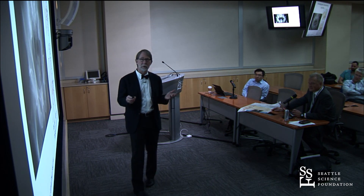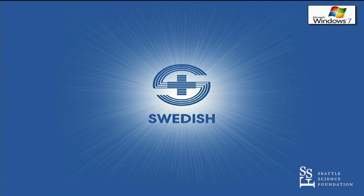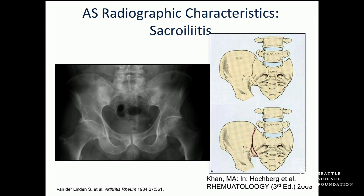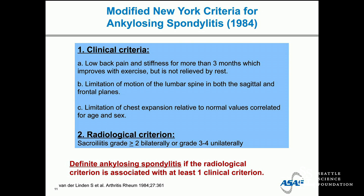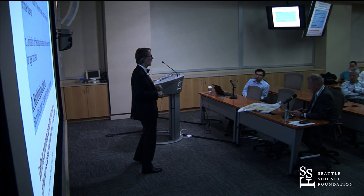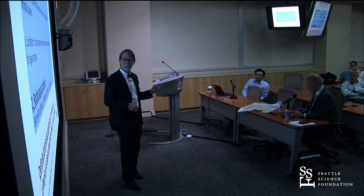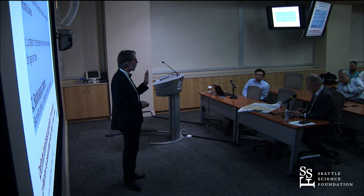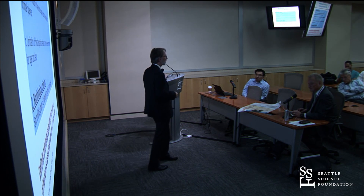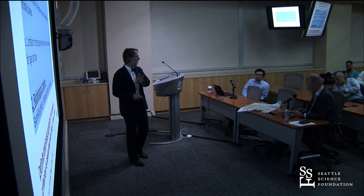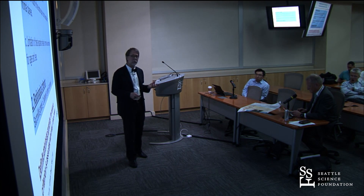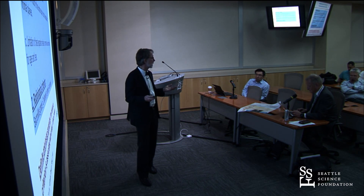Here's a plain radiograph that clearly shows articular narrowing, irregularity, and periarticular sclerosis. This is the 1984 modified New York criteria for ankylosing spondylitis. The requisite feature is having at least grade two changes in the sacroiliac joints on x-ray bilaterally, or unilaterally grade three or four. Already, if you will, the horse is out of the barn — damage has occurred — and this is a relatively late-stage phenomenon to see these x-ray changes, but it was the imaging technology available at the time.